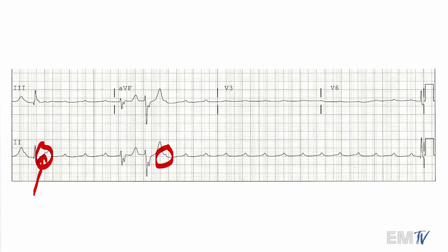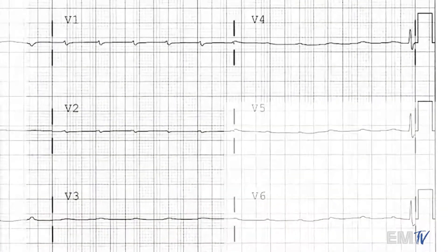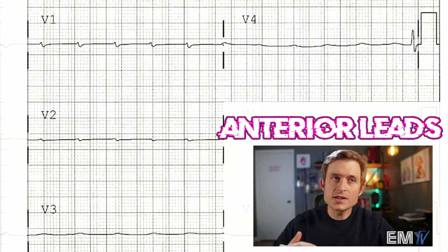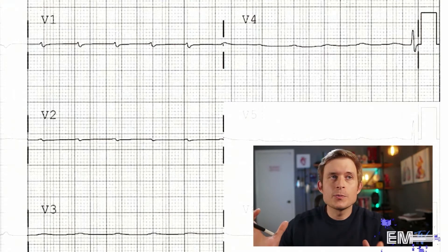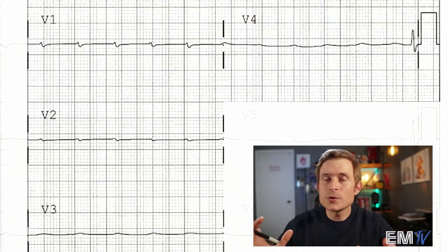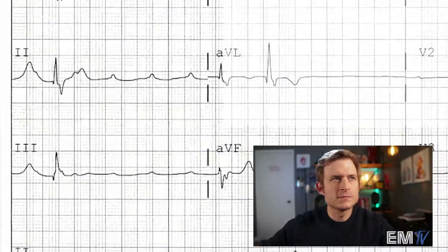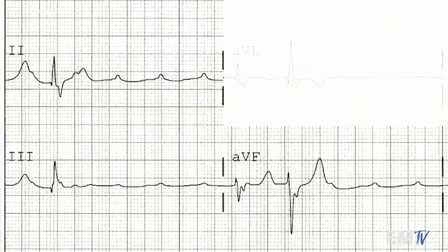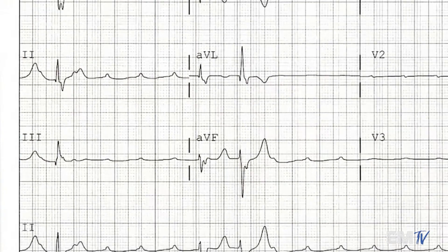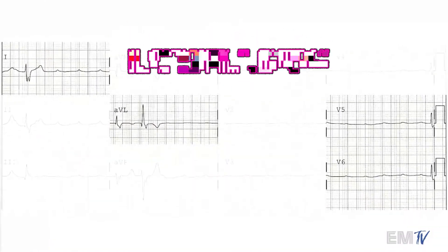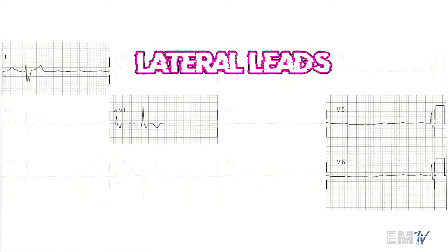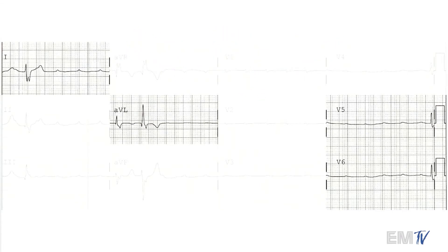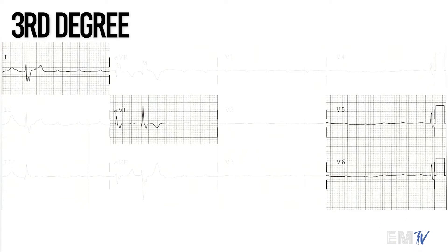3rd degree heart blocks are known for having P waves that are superimposed in QRS complexes and in T waves. Let's now examine the other lead groupings. Because this 3rd degree heart block is so slow and doesn't conduct that often, my anterior lead grouping is largely undiagnostic because all it is full of is P waves. In my inferior leads I am seeing some QRS complexes, but nothing is jumping out at me — this is still simply a 3rd degree heart block. The lateral lead groupings are similarly inconclusive, so for static cardiology purposes, I would identify this rhythm as a 3rd degree heart block.